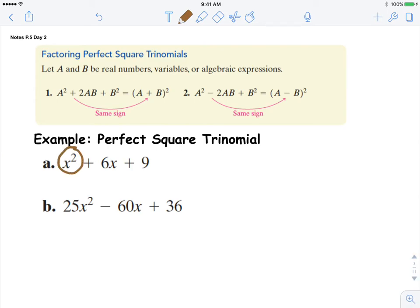This is your a term, so that's x squared. And then this is your b term plus 3 squared. We can go ahead and change that to the rule a plus b, so x plus 3 all squared.